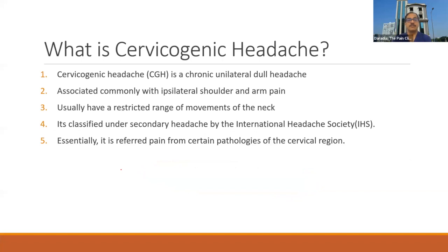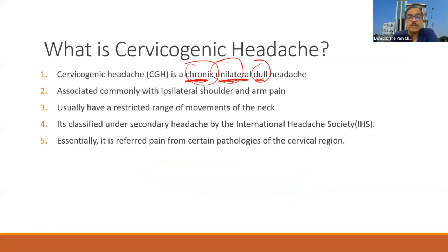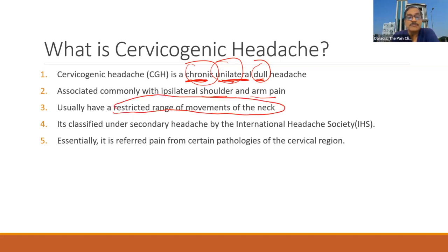What is cervicogenic headache? It is chronic — chronic means more than three months. It is unilateral; very rarely it is bilateral. It is dull — not sharp, not lancinating pain. So chronic, unilateral, dull headache — that is cervicogenic headache. It is commonly associated with ipsilateral shoulder and arm pain. So neck pain, headache, and shoulder and arm pain. There is restricted range of movement of the neck. It is classified under the secondary headache by the International Headache Society — pathology is in the neck and it presents with headache.